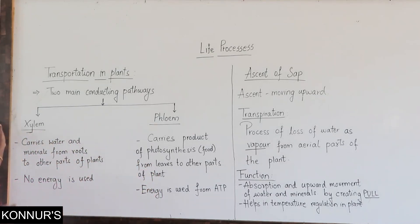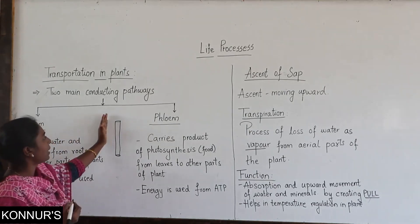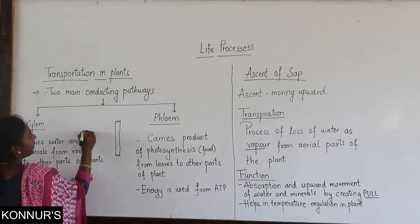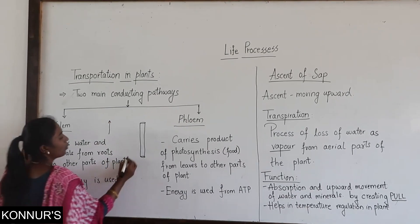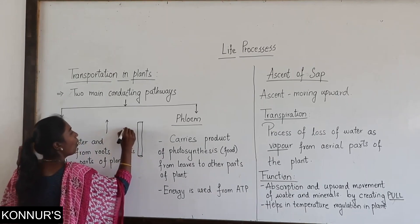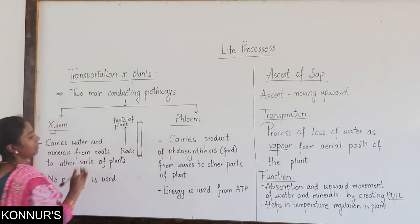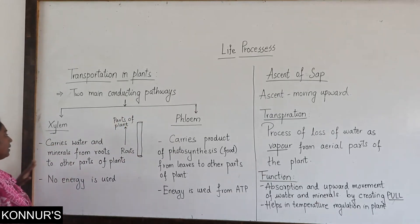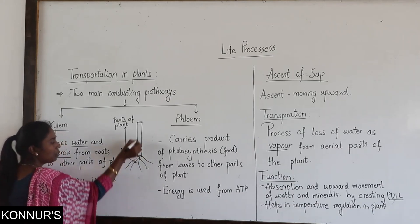Let us start with xylem. These tissues are pipe-like structures, just as our body has arteries and veins. Xylem is unidirectional — that means whatever nutrients it carries, it carries in one direction only, that is from roots to all parts of the plant. It carries water and minerals. Xylem tissue is responsible for carrying the nutrients and minerals present in the soil and the water, from roots to all parts of the plant.